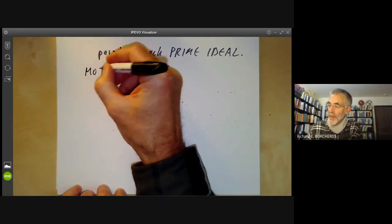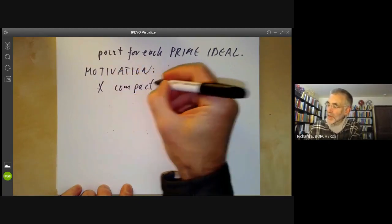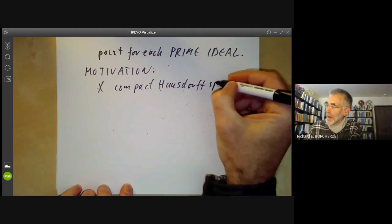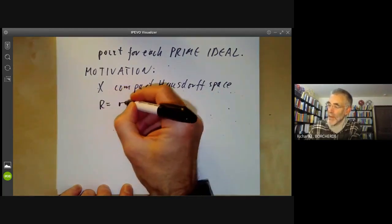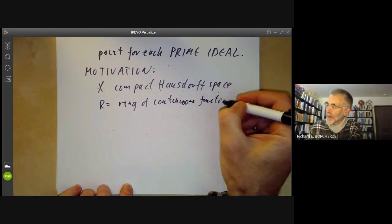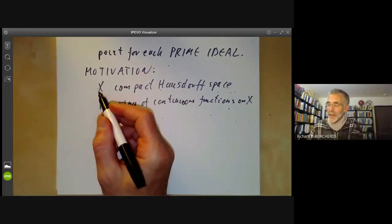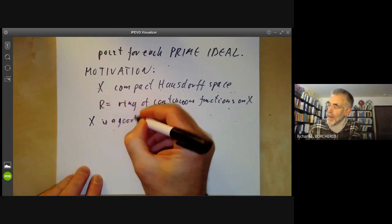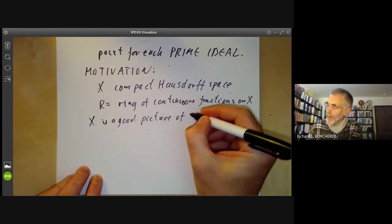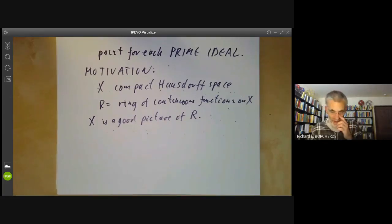I'll start with some motivation. Suppose X is a compact Hausdorff space. I'm going to take R to be the ring of continuous functions on X under pointwise multiplication. The idea is that X is a good picture of the ring R — we draw a picture of X and think of R as being the ring of continuous functions on that space. That's sort of the idea of defining the spectrum of a ring.